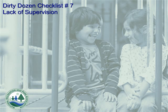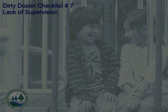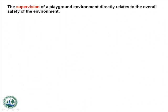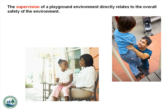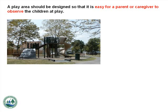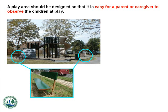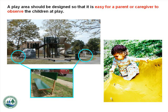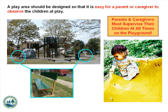Number 7: Lack of Supervision. The supervision of a playground environment directly relates to the overall safety of the environment. It is estimated that over 40% of all playground injuries are directly related to improper use of equipment combined with lack of supervision. A play area should be designed so that it is easy for a parent or caregiver to observe the children at play. Young children are constantly challenging their own abilities, often not being able to recognize potential hazards. Parents and caregivers must supervise their children at all times on the playground.